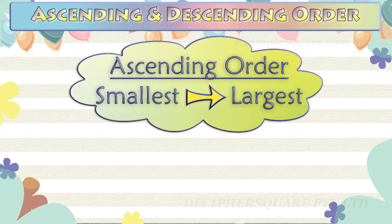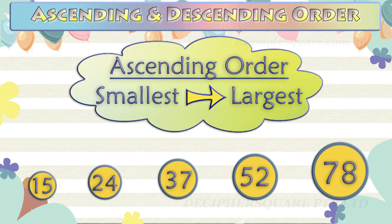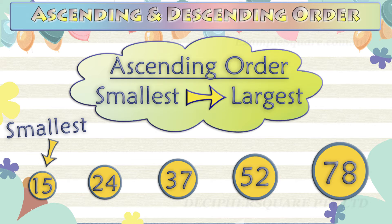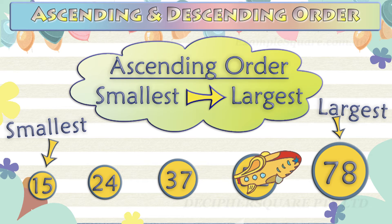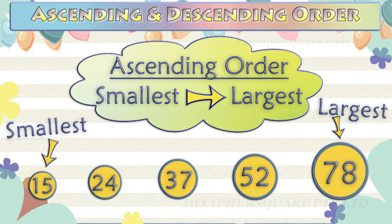Arranging numbers in an ascending order means to arrange the numbers in an increasing order, that is from the smallest to the largest. For example, these numbers are arranged in ascending order, that is from the smallest number to the largest number. So when the numbers are arranged in an ascending order, the smallest number comes first and the largest number comes last.